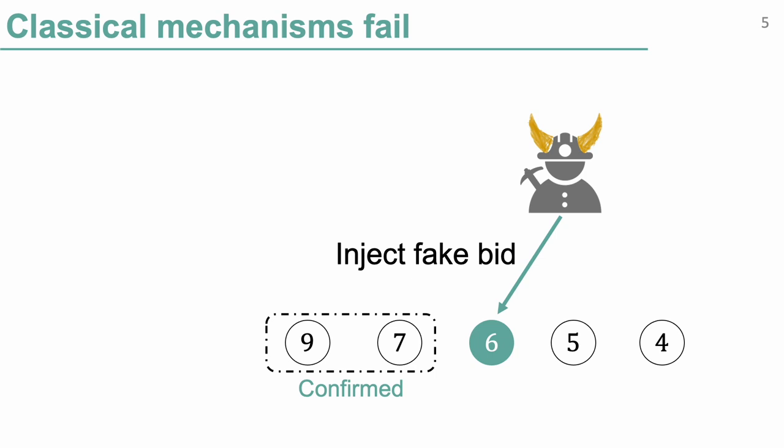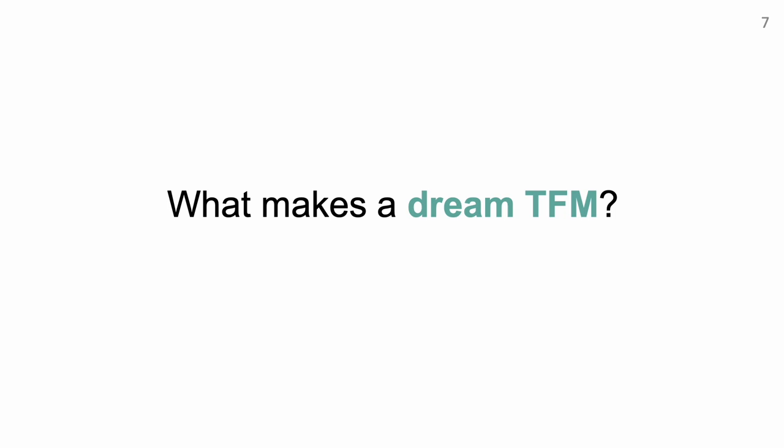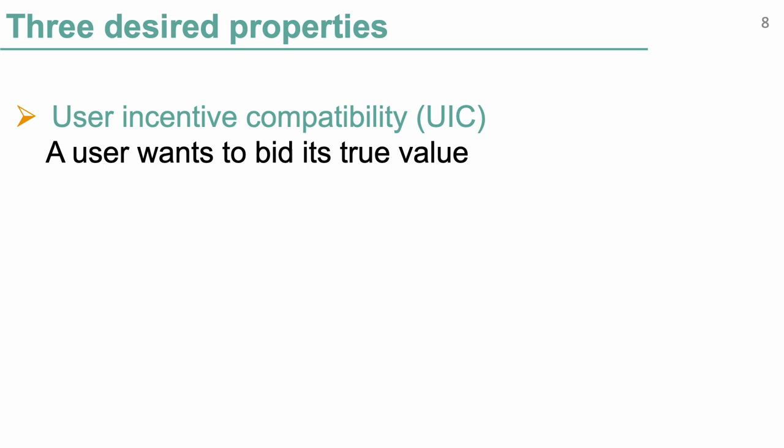More generally, in the classical setting we usually assume the miner or auctioneer is fully trusted, and we care about designing mechanisms that incentivize users to bid truthfully. However, on blockchain the miner is also a strategic player, so it may have incentive to cheat and not implement the mechanism honestly. This is why classical mechanisms are not a good fit for transaction fee mechanisms. So it is important to understand what desired properties make a dream transaction fee mechanism. A recent line of work agreed that the following three properties are important.